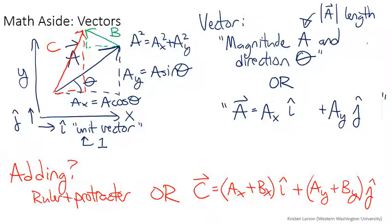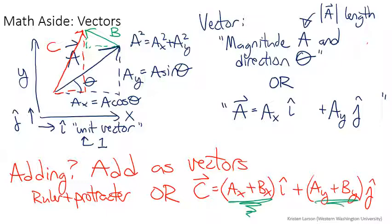So you're going to hear me say things like add as vectors. What do I mean by that? I mean that if vector A has a length 2 and vector B has a length 1, vector C doesn't have a length of 2 plus 1. Actually, in the way I've drawn it here, it has a length of less than 2, or maybe equal to 2. It depends on the direction. So what we do when we add as vectors is we're going to add the x parts separately and the y parts separately.